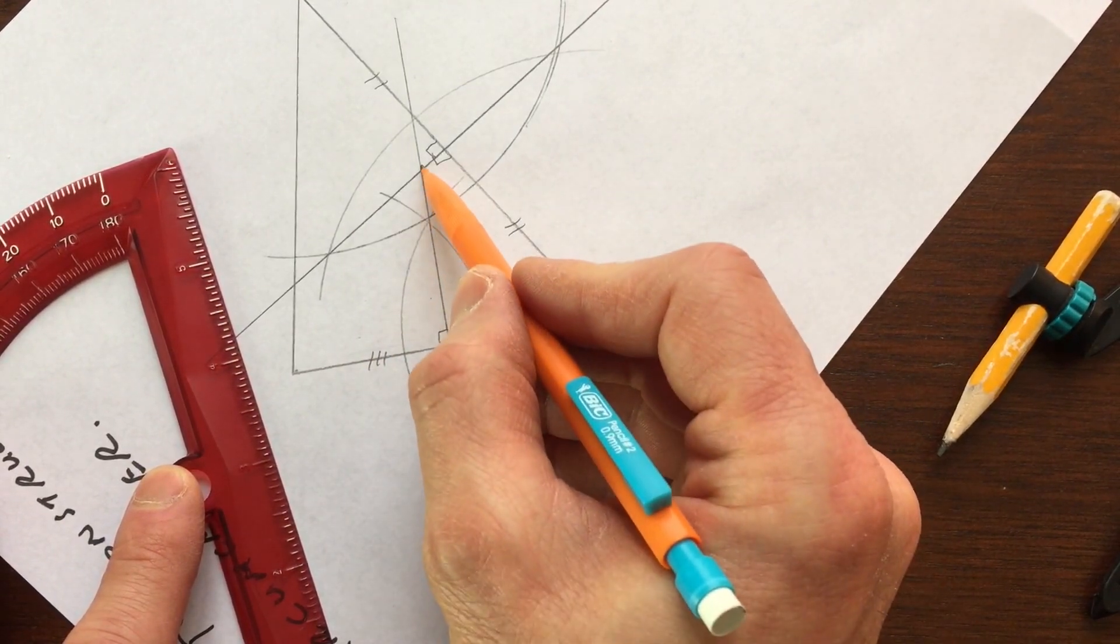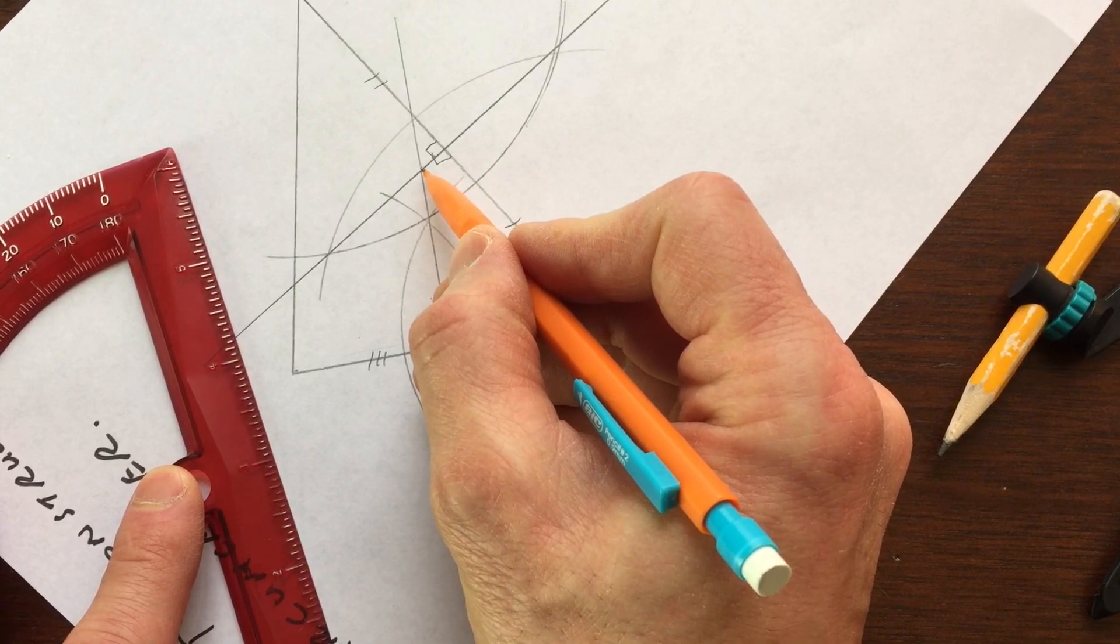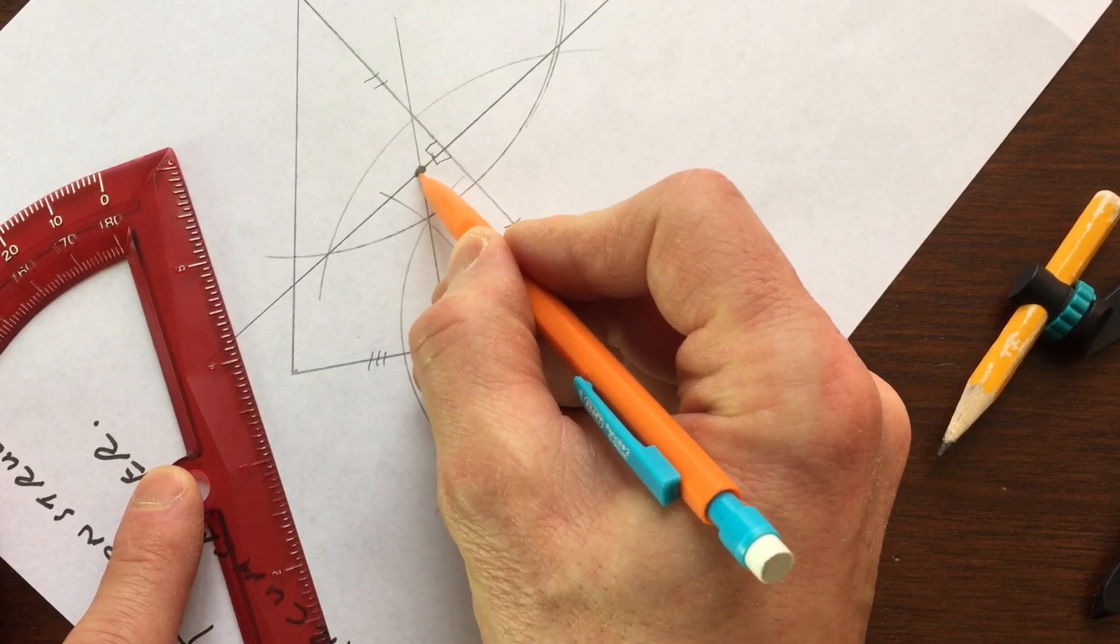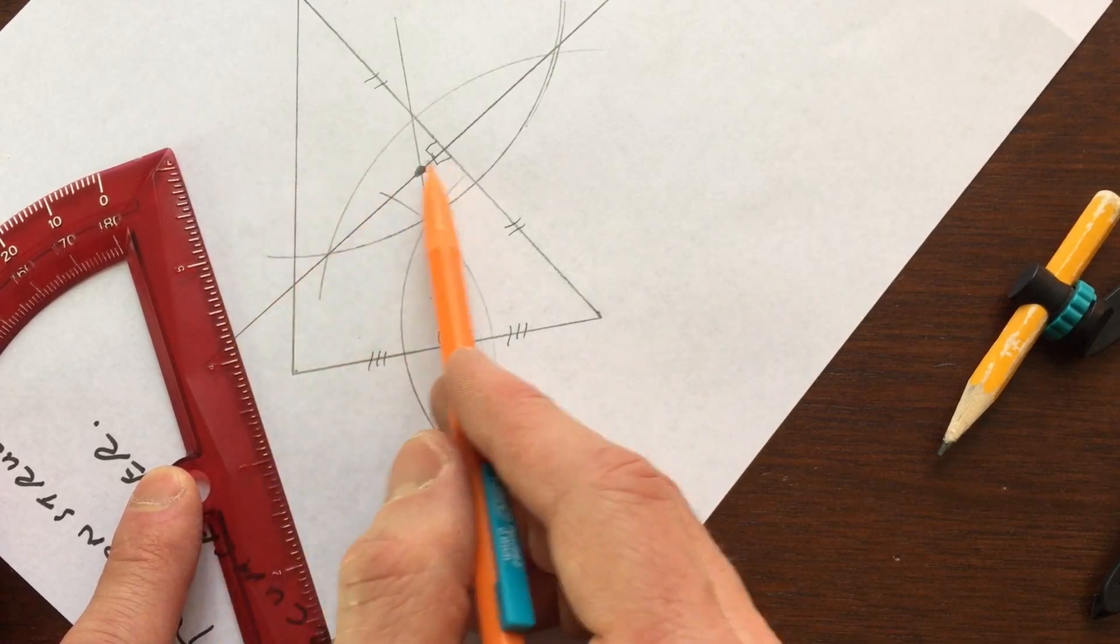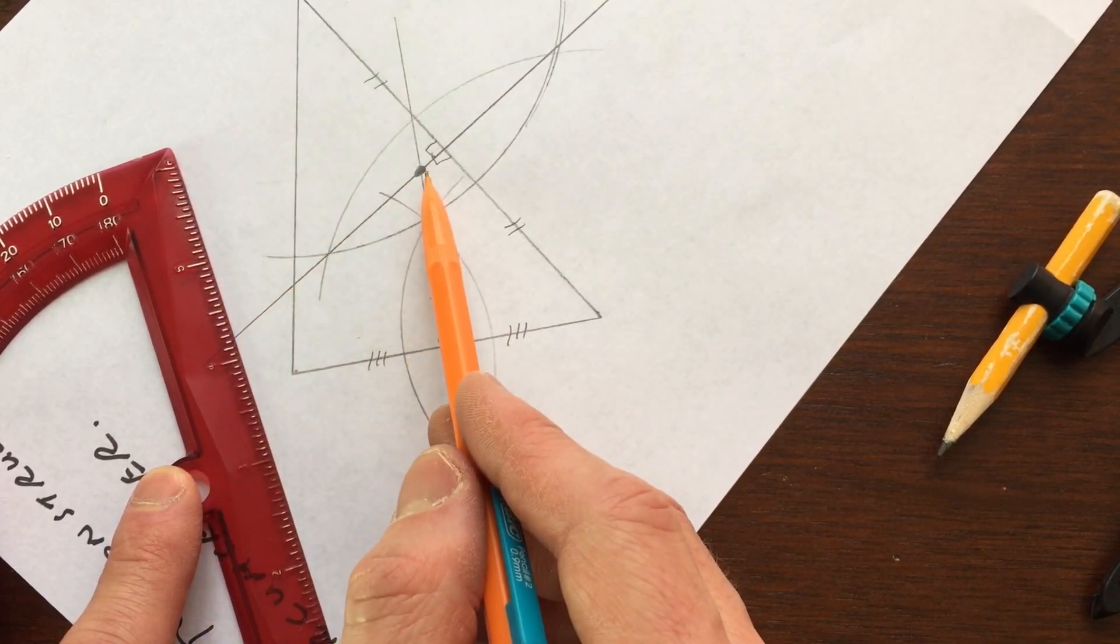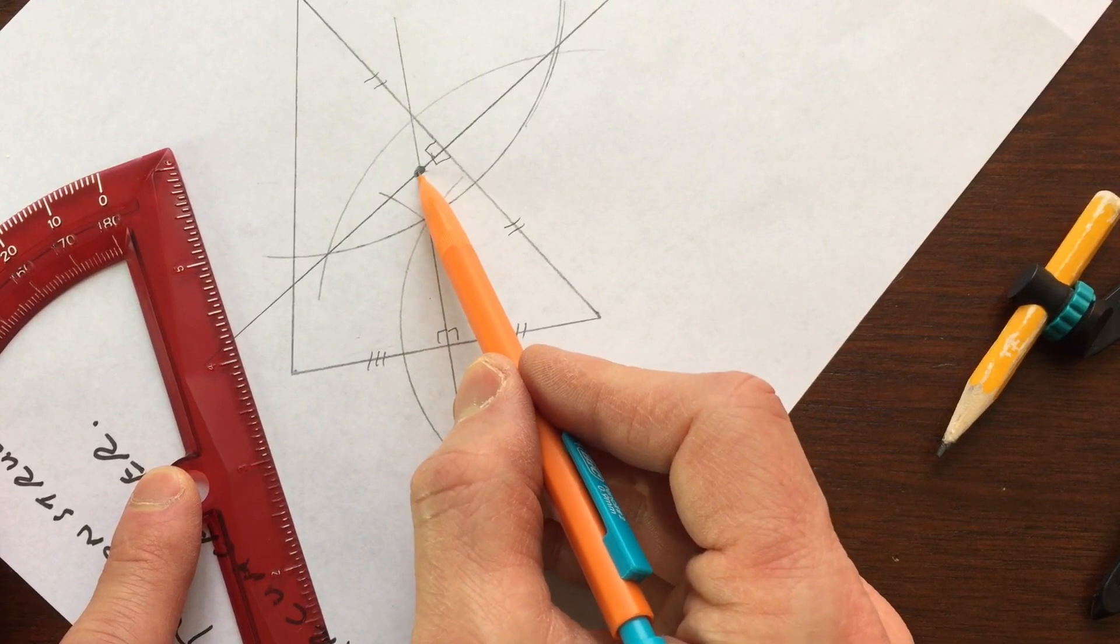Now, if you see where these two perpendicular bisectors are crossing, they're crossing right here. That point right there is the circumcenter, and if we were to draw a third perpendicular bisector with this third side over here, it would also cross at this point. But just to keep it simple, we just drew two.